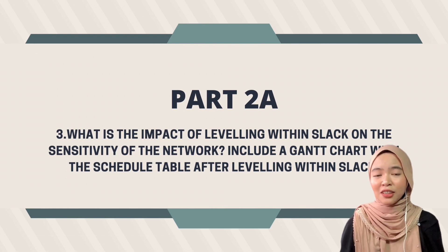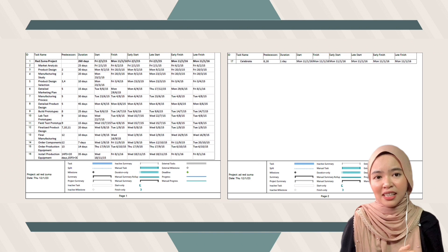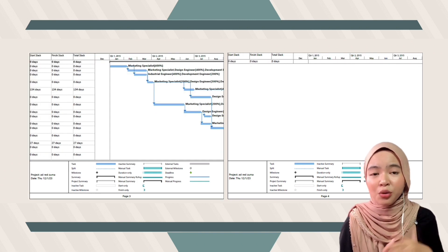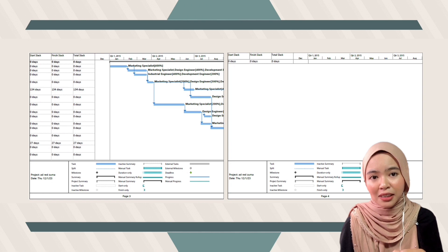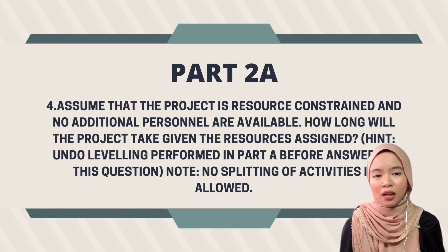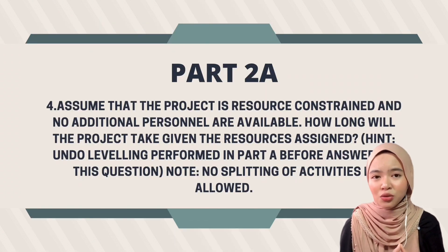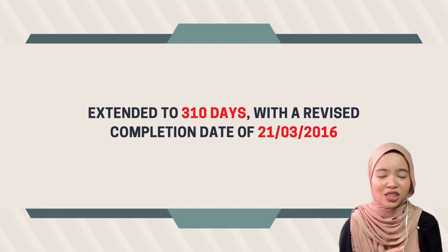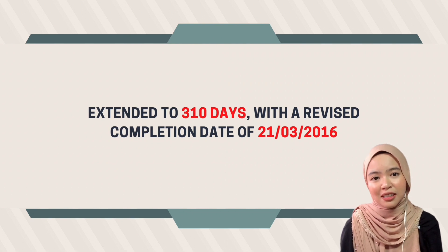The leveling affected the project schedule since it added additional routes and cut down the overall number of slack days, making the network more sensitive due to reduced flexibility. Figures in the slides illustrate the project Gantt chart and schedule timetable after leveling within slack. If we assume the project is resource-constrained with no additional personnel available, the project time frame will need to be extended to 310 days, with a revised completion date of 21st March 2016.